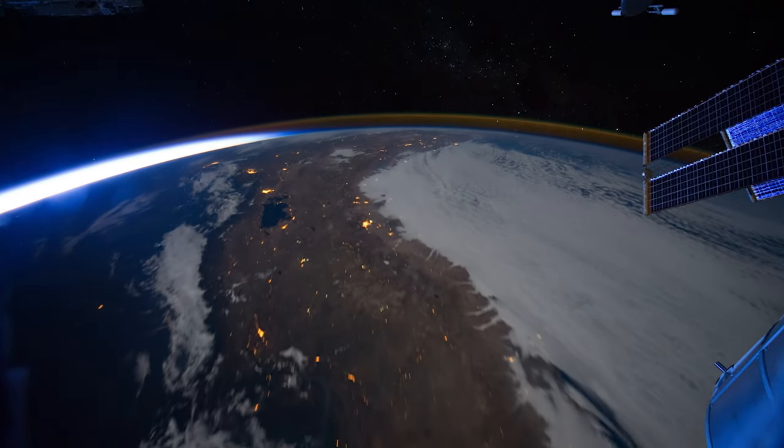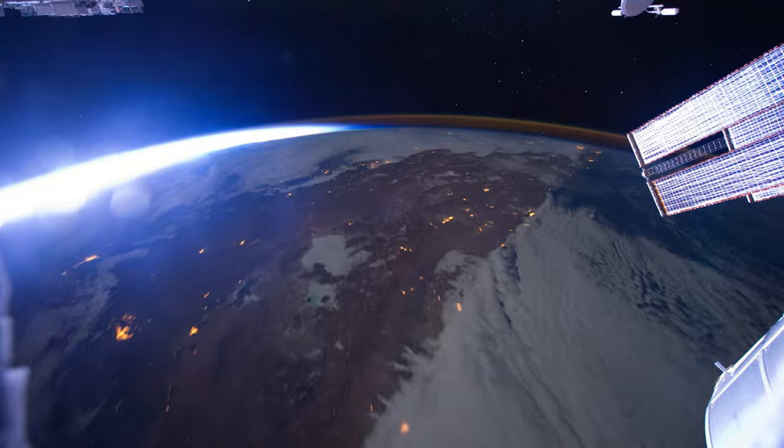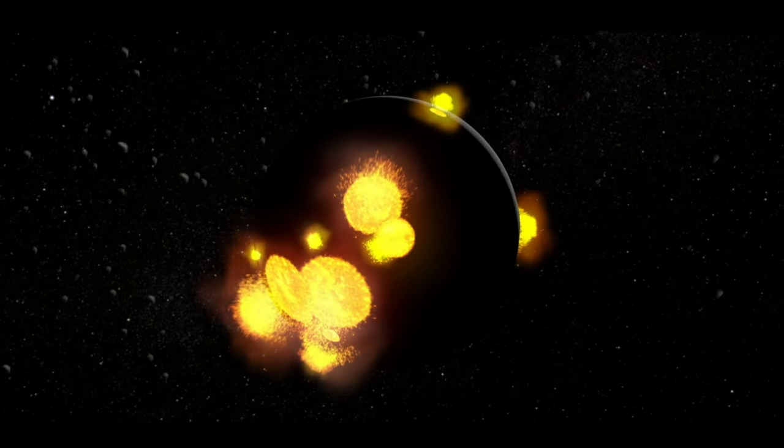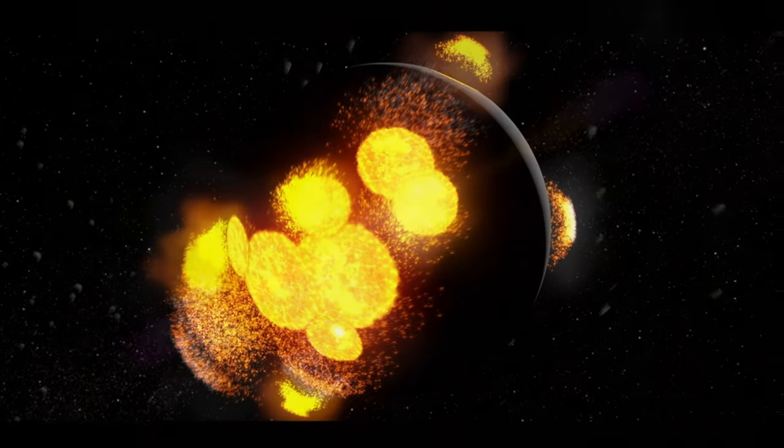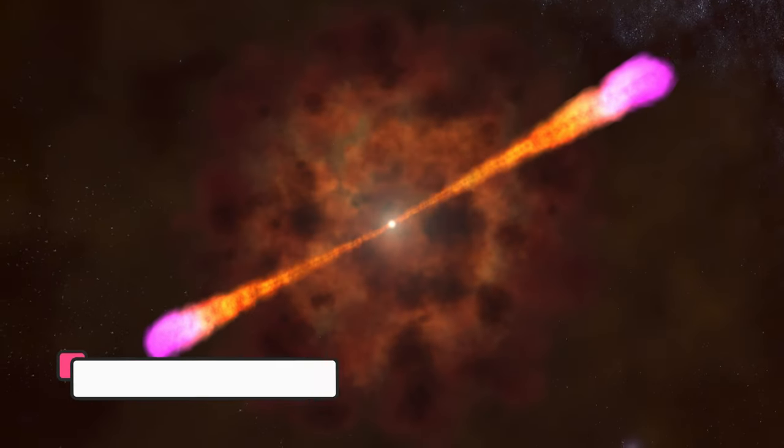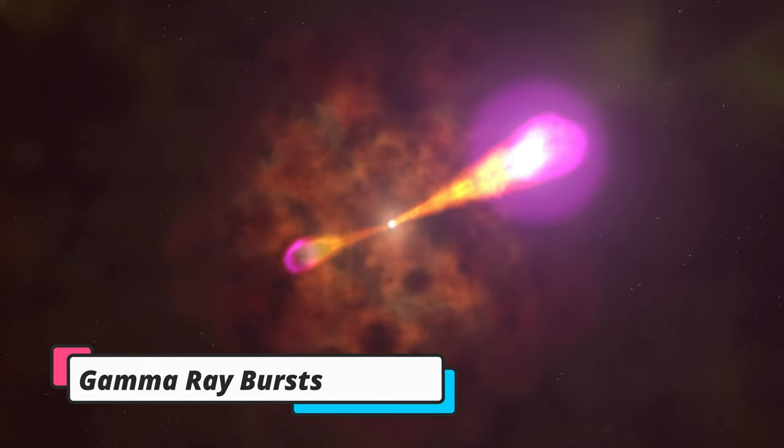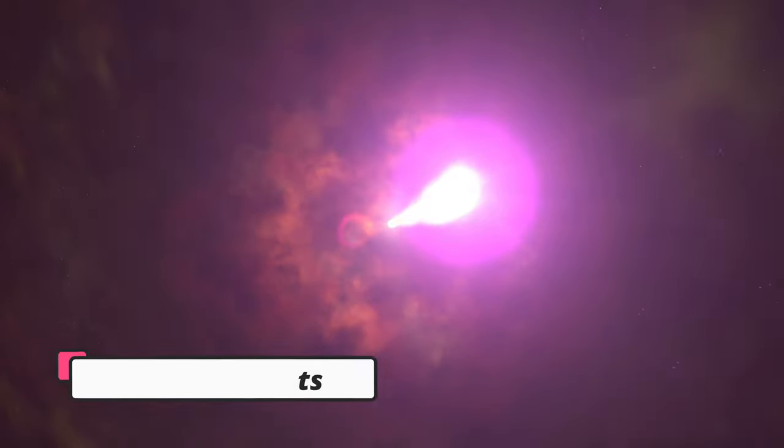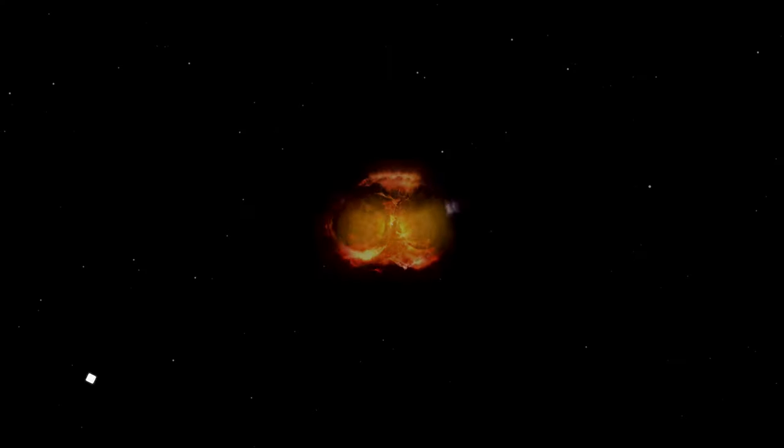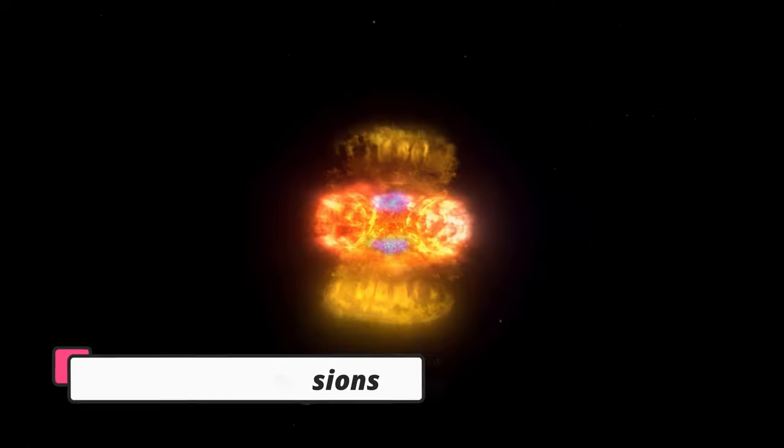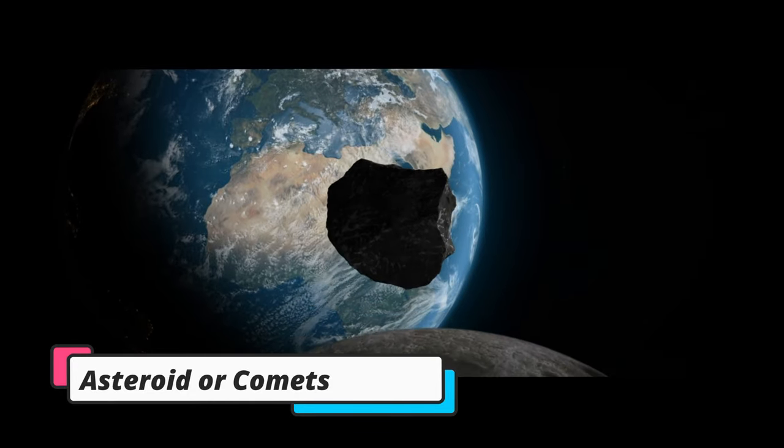There are different ways in which planet Earth would meet its eventual demise. There are some threats outside our solar system like gamma ray bursts, nearby supernova explosions, and some threats are inside our solar system itself like giant collisions with asteroids or comets.